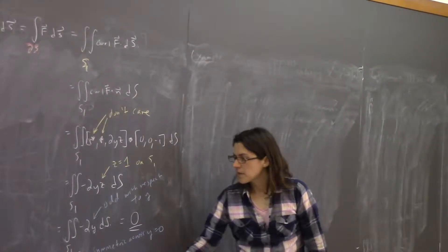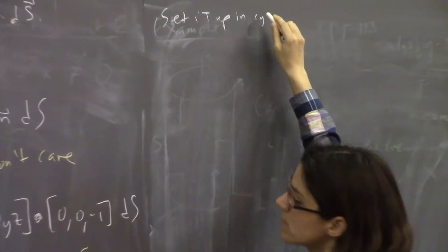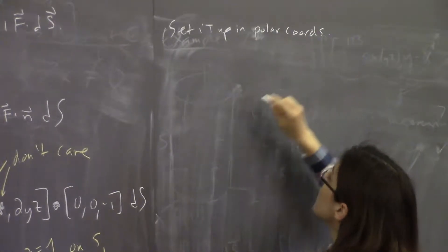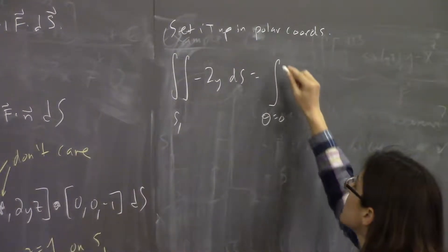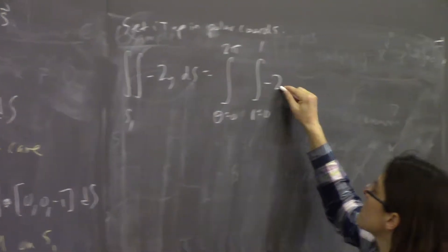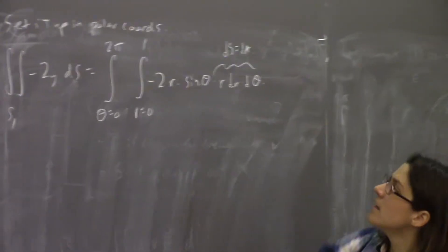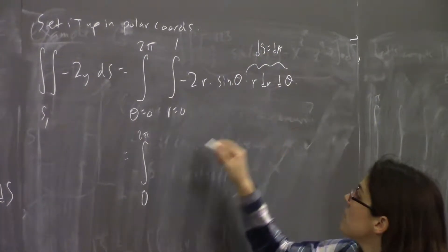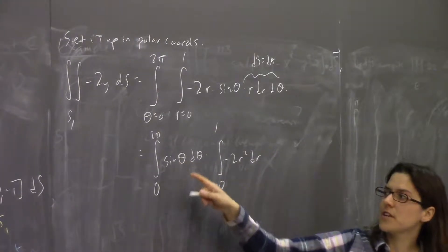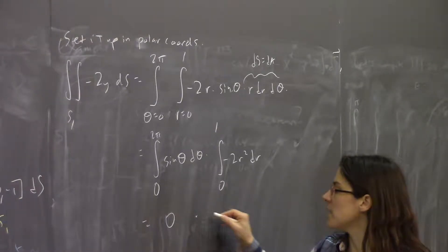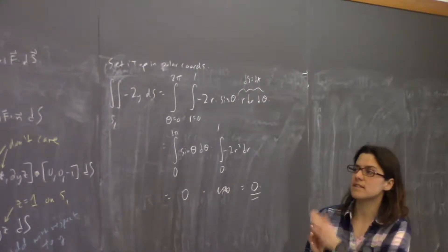If you didn't see the symmetry, you could just set it up and integrate in polar coordinates. The double integral over S1 of −2y dS equals the integral from θ = 0 to 2π, r = 0 to 1, of −2r·sin θ · r dr dθ, since ds is just dA. We can split it up: the integral of sin θ over a full period is 0, so this is 0 times something finite, which is 0.